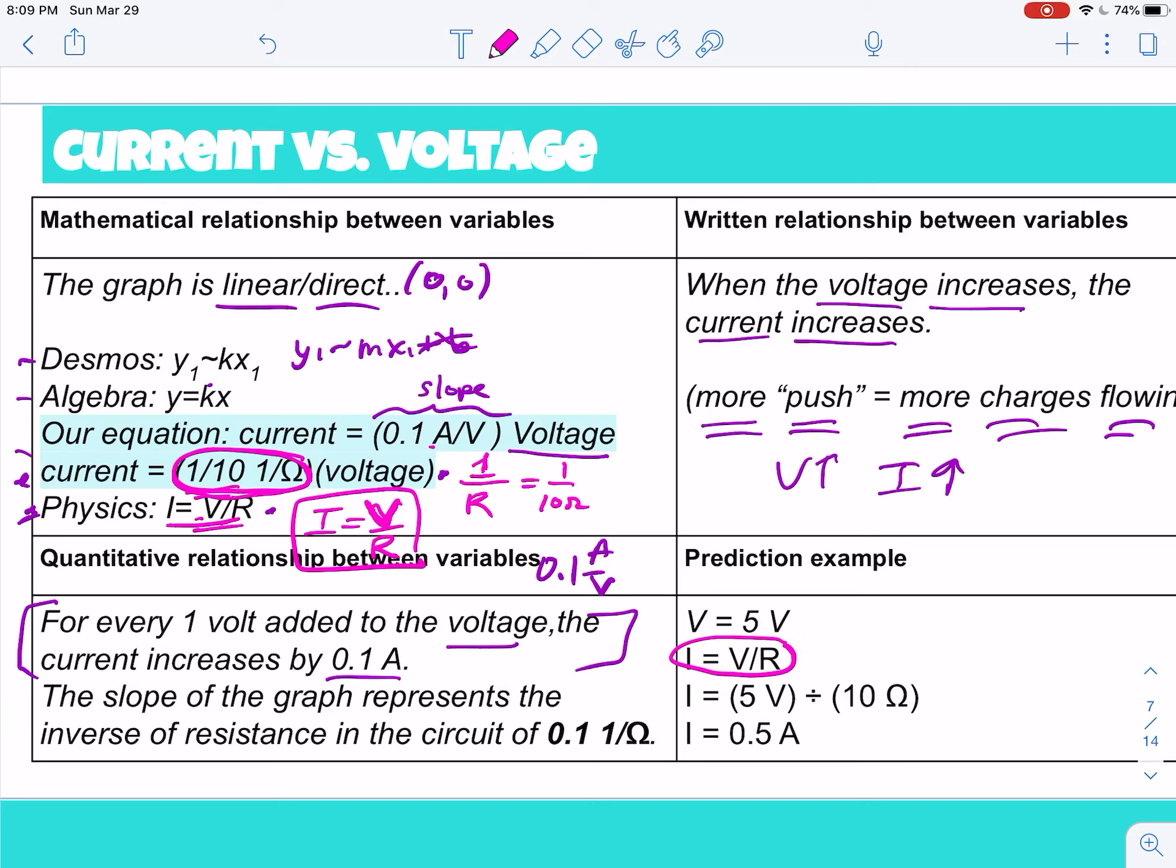Remember, you're gonna choose a voltage, okay? And then you're gonna have I equals V over R. So if I had five volts, my resistance was 10 ohms, then that would give me a current of 0.5 amps, okay? All right, so for quantitative relationship, just explain it this way, right?